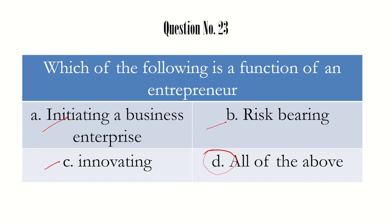Here is a suggestion: whenever you see 'all of the above' or 'none of the above' as option D, it is always better to read all the options before concluding. If we had selected option A right away we would have been wrong. Make it a habit to read from the last option — D, C, B, A — so that selecting the correct answer becomes easier.